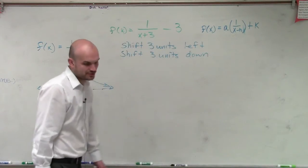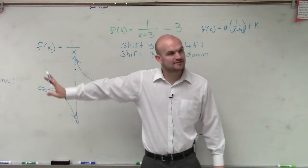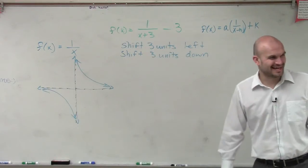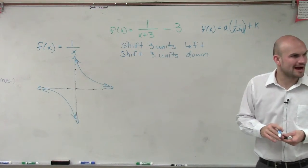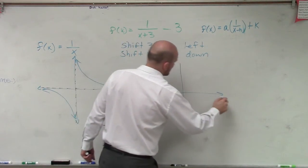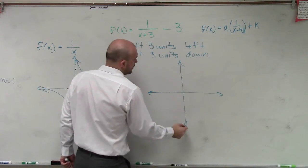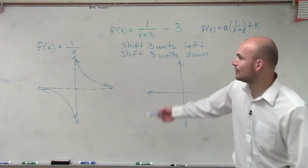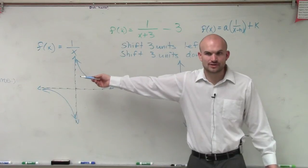So what I need to do then is I need to take this graph, shift it 3 units to the left and 3 units down. Now, these are what we call hyperbola. And you guys are kind of unfamiliar with the hyperbola. It's a little bit difficult to graph it. So rather than trying to shift my hyperboles, what I'm going to do is I'm going to shift the asymptotes. Because I know I have an asymptote at x equals 0, and I have an asymptote at y equals 0.